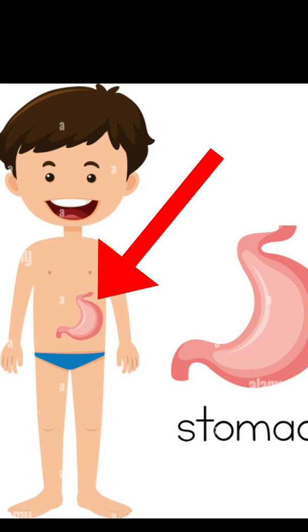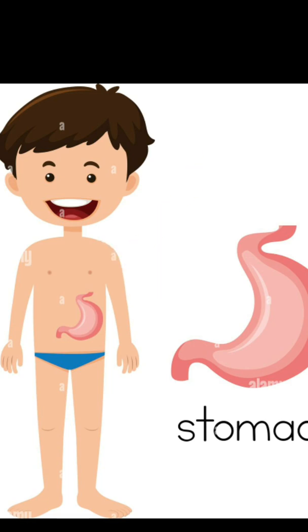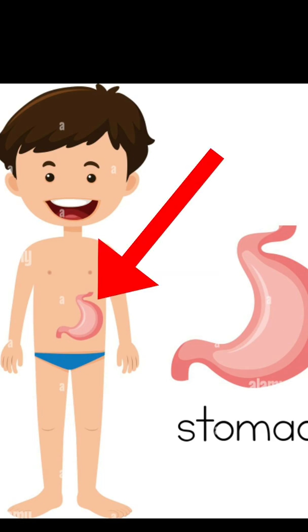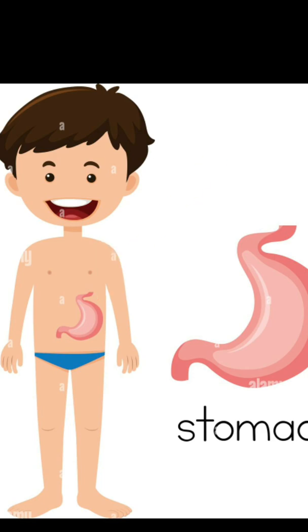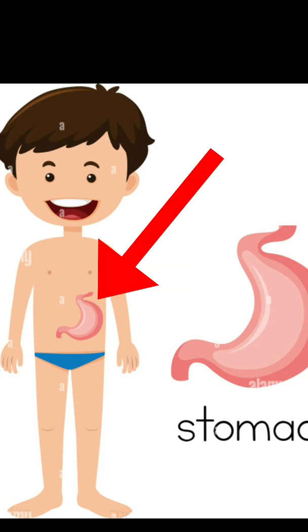Next part is stomach. Whatever we eat, it goes into the stomach. Jo bhi hum din mein khaate hai, peete hai, sab jata kaha hai — hamari mouth ki through jata hai stomach ke andar. And there the next procedure shuru hoti hai.